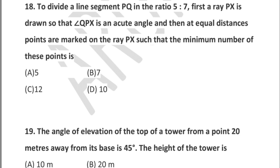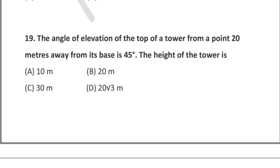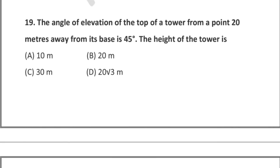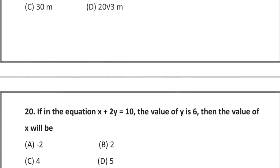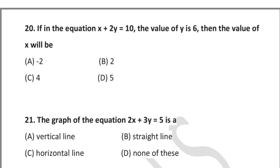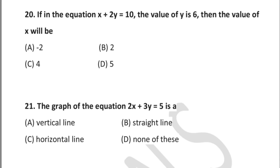Question 19: the angle of elevation of the top of a tower from a point 20 meters away from its base is 45°. The height of the tower is — option A: 10 m, option B: 20 m, option C: 30 m, option D: 20√3 m. Question 20: in the equation x + 2y = 10, if y = 6, then x is — option A: −2, option B: 2, option C: 4, option D: 5.